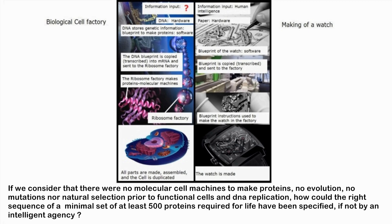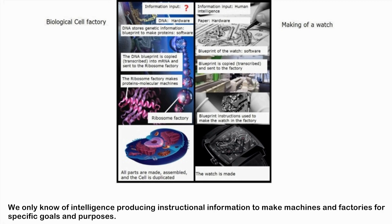If we consider that there were no molecular cell machines to make proteins, no evolution, no mutations, nor natural selection prior to functional cells and DNA replication, how could the right sequence of a minimal set of at least 500 proteins required for life have been specified — if not by an intelligent agency? We only know of intelligence producing instructional information to make machines and factories for specific goals and purposes.